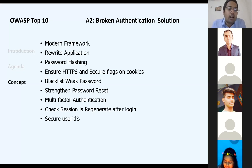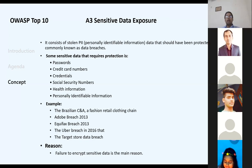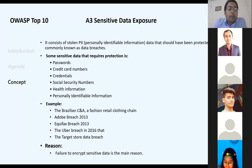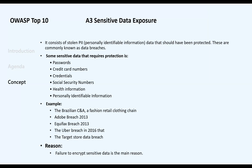The third OWASP category is Sensitive Data Exposure. Sensitive data includes passwords, credit card numbers, credentials, social security numbers like Aadhaar, and health information. Real examples of sensitive data exposure include breaches at Adobe and Uber in 2016, where all records were stolen.